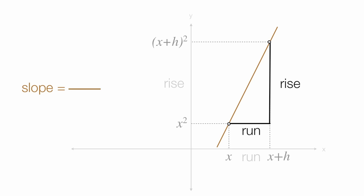Nonetheless, the slope is rise over run, and the rise is x plus h squared minus x squared, divided by the run, which is x plus h minus x.